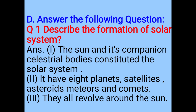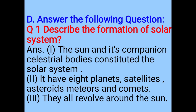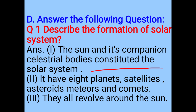Answer the following question: Describe the formation of the solar system. The Sun and its companion celestial bodies constitute the solar system. It has eight planets, satellites, asteroids, meteors, and comets. They all revolve around the Sun.